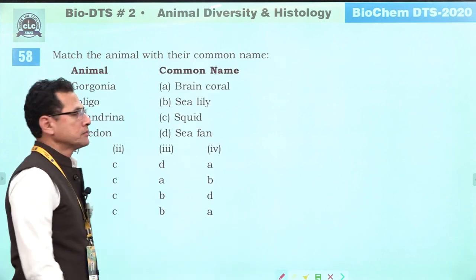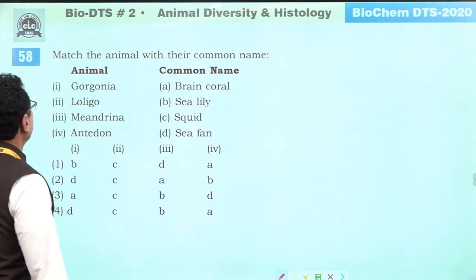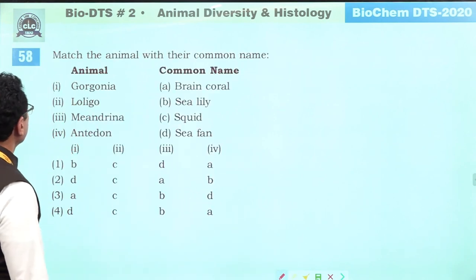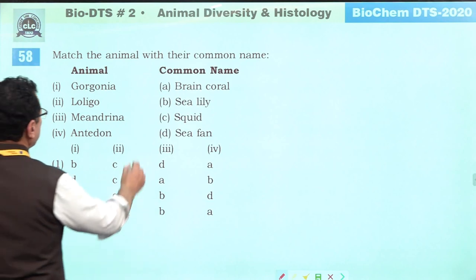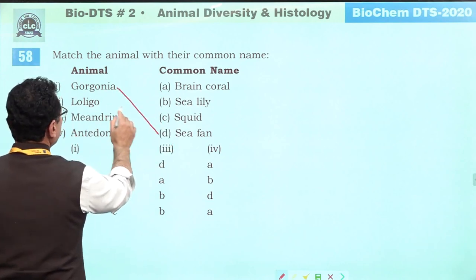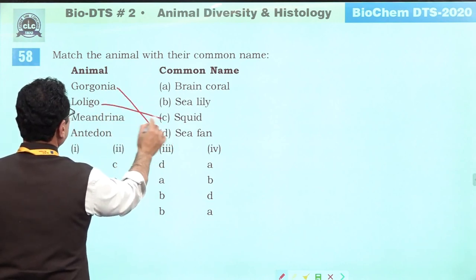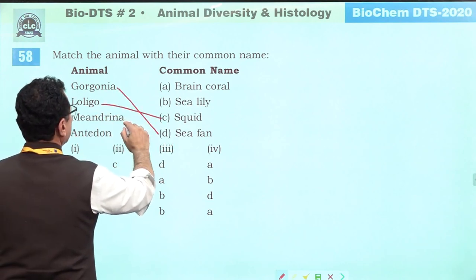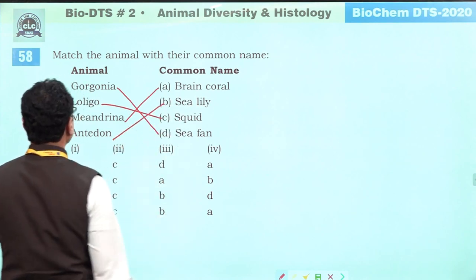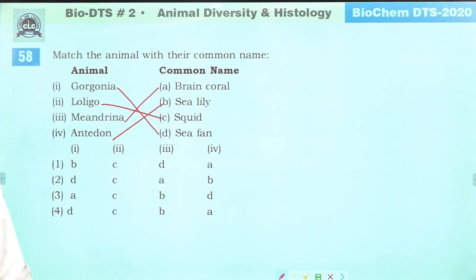Match the following animals with their common names: Gorgonia — sea fan; Loligo — squid; Meandrina — brain coral; Antidone — sea lily. This is the correct matching.